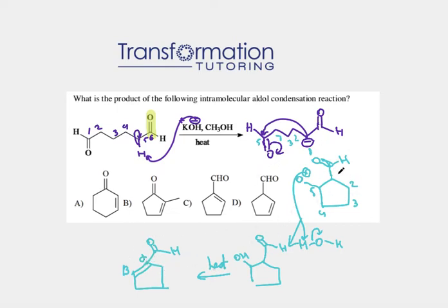I don't think I missed any atoms or groups, so this must be my answer. Let's look at the answer choices: A is not right because I have the wrong ring size. B has a methyl group that I don't see in my product. Looking at C, we have a cyclopentene ring, which is exactly what we have here, with a CHO group — CHO is the aldehyde, the C=O. So C looks like the correct answer. D looks very similar to C, but it has the double bond in the wrong position.